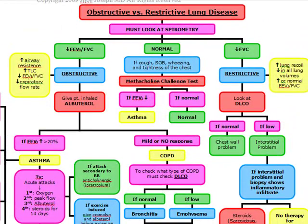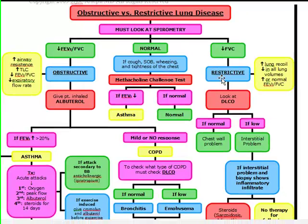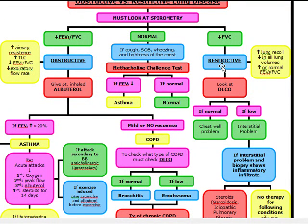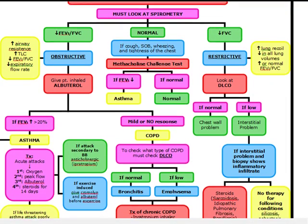If spirometry shows a decrease in forced vital capacity, we suspect restrictive lung disease. Restrictive disease is characterized by increased lung recoil, a decrease in all lung volumes, and an increased or normal FEV1-FVC ratio, which differs from obstructive disease. Causes include obesity, kyphosis, fibrotic lung diseases such as sarcoidosis, amyloidosis, hemochromatosis, and interstitial lung diseases.